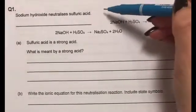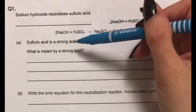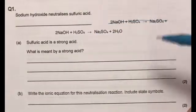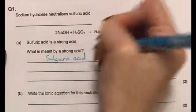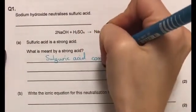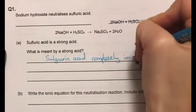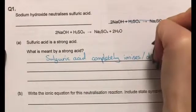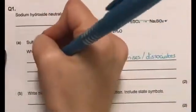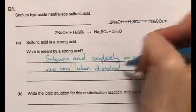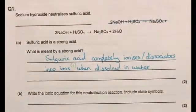So sodium hydroxide neutralizes sulfuric acid. Part A tells us that sulfuric acid is a strong acid and then it asks us what is meant by a strong acid. Sulfuric acid completely ionizes or dissociates into ions when dissolved in water.